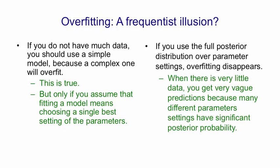If there's very little data, the full posterior distribution will typically give you very vague predictions, because many different settings of the parameters that make very different predictions will have significant posterior probability.